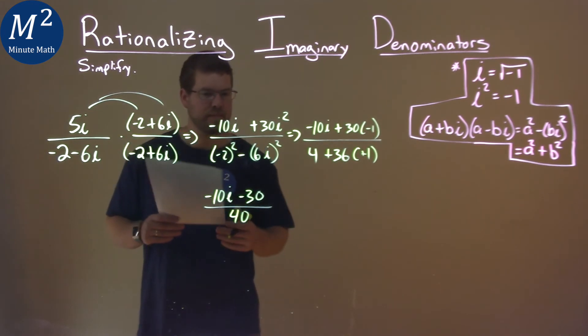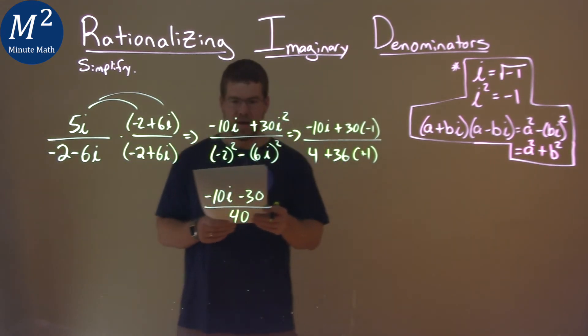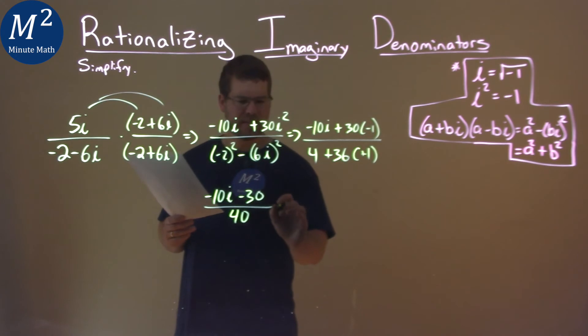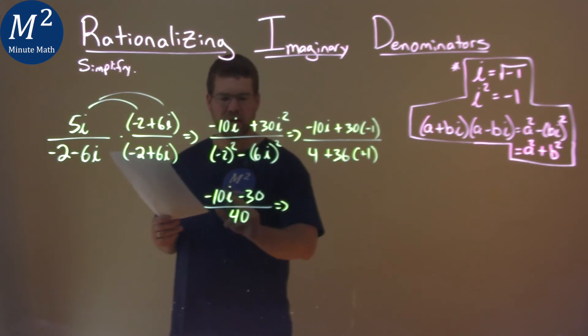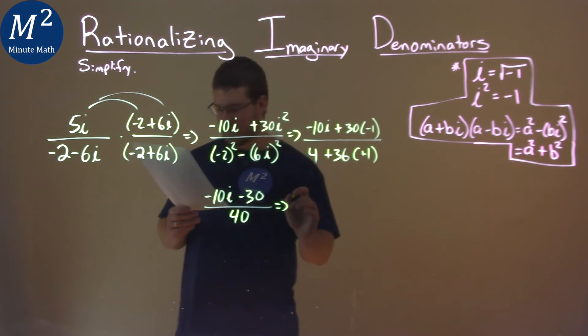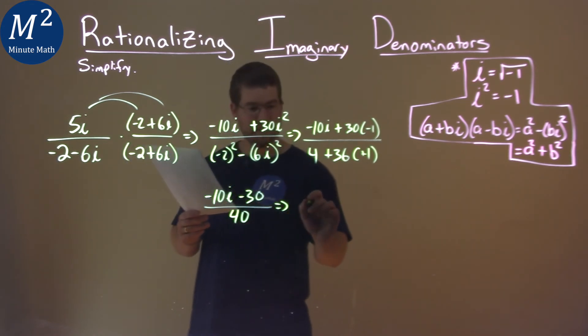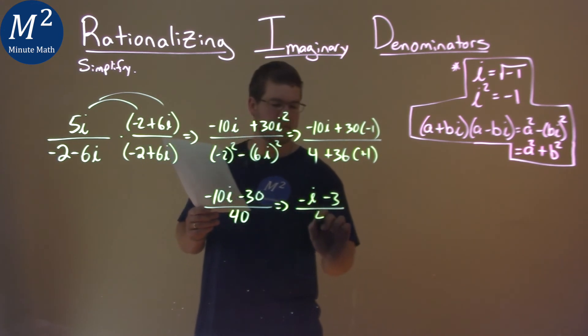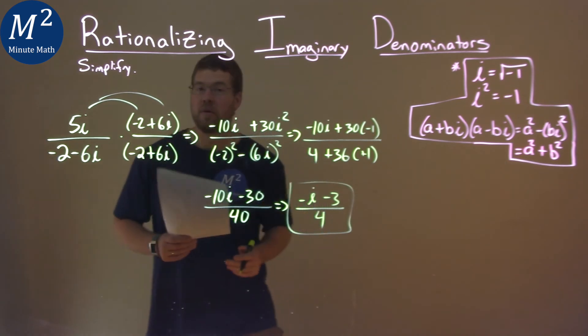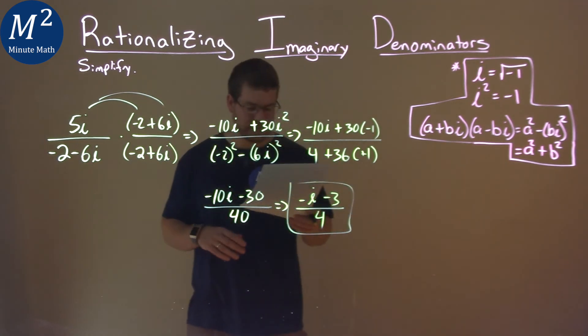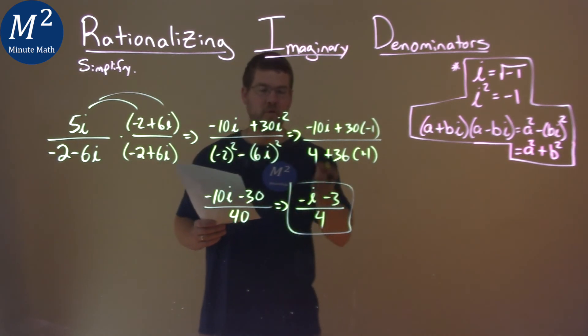So we have 40. And how can we simplify this even more? Well, 10 goes into all parts, so we divide everything by 10. Negative 10i divided by 10 is negative i. Negative 30 divided by 10 is minus 3. And 40 divided by 10 is 4. And so our final answer is negative i minus 3 over 4.